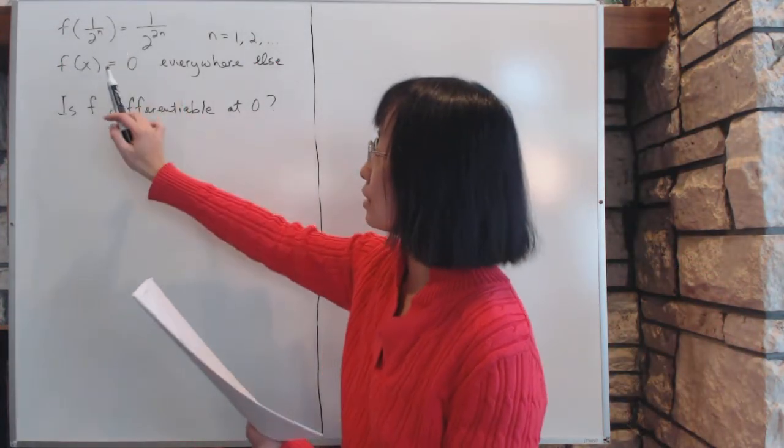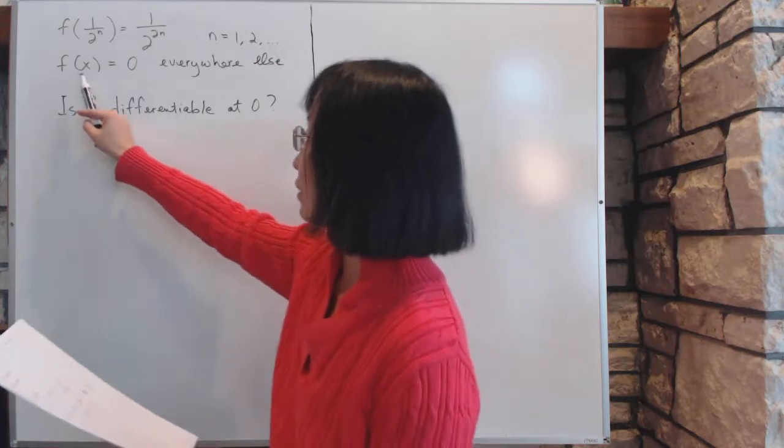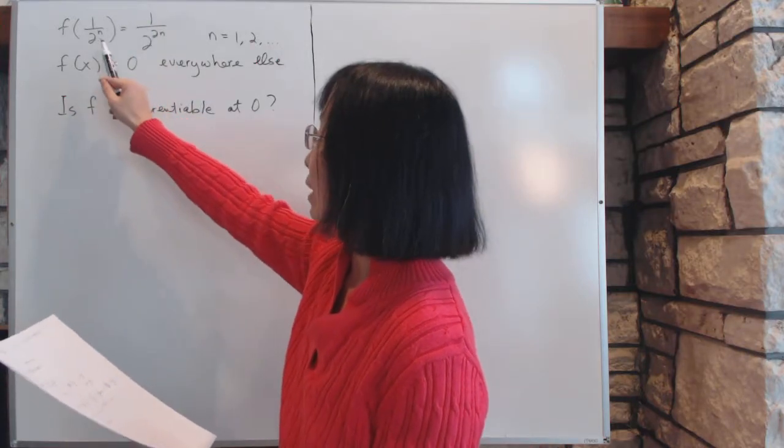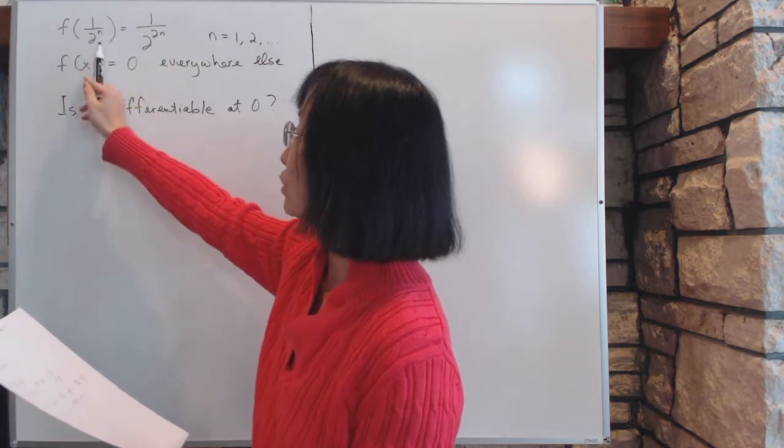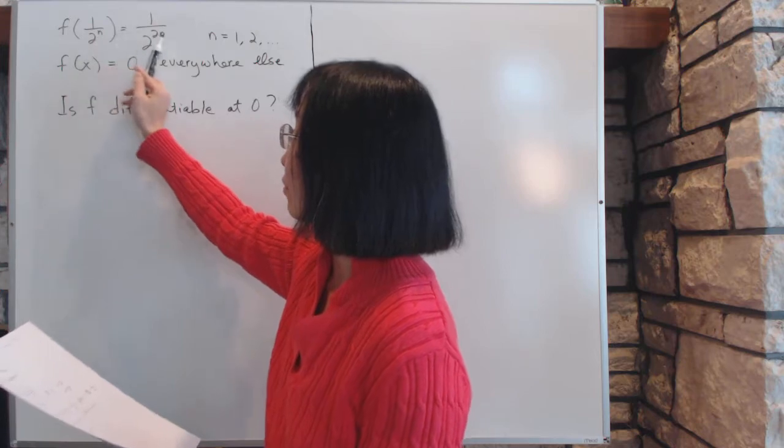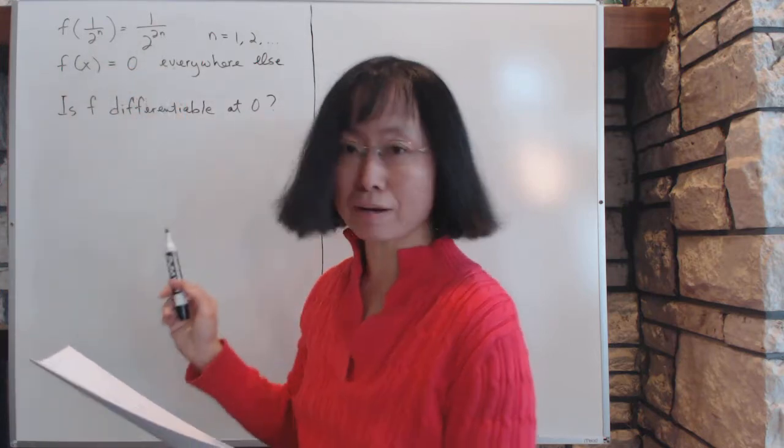F is defined in this odd way. F is zero almost all the time, except if x happens to be 1 over 2^n, where n is 1, 2, etc., then the value of f is 1 over 2^(2n).